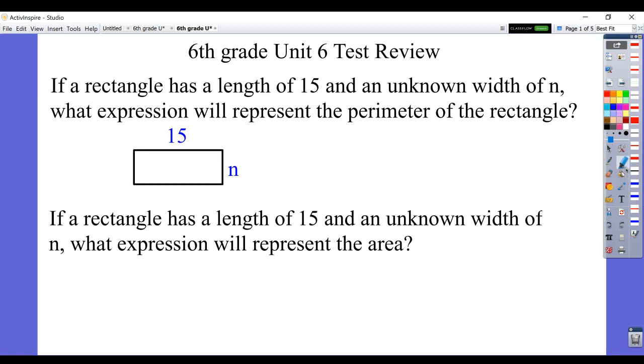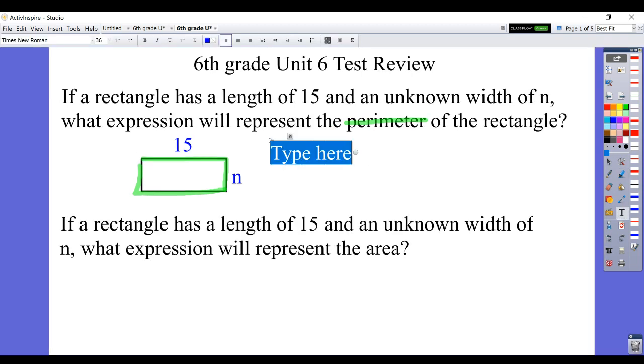What we want then is an expression that will represent its perimeter. So an expression is not the same as an equation. You're not solving anything. You're just writing down the mathematical process that you would use, basically, to find the perimeter. And we know the perimeter is adding the length plus the width plus the length plus the width. Or in a rectangle, two times length plus width.